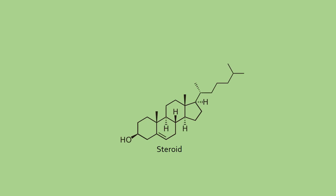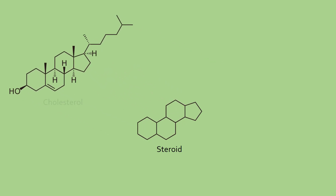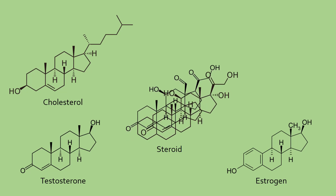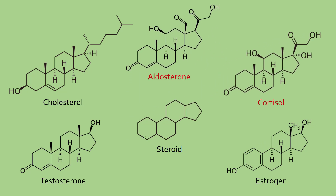There are many types of steroids found in our body. For example, cholesterol is a steroid involved in cell membrane structure, while testosterone and estrogen are steroid hormones involved in reproduction and secondary sex characteristics. The synthetic steroids used to build muscle mass, called anabolic steroids, are very similar to testosterone. But the steroids we will focus on in this video are the corticosteroids, cortisol and aldosterone, which are essential to life.